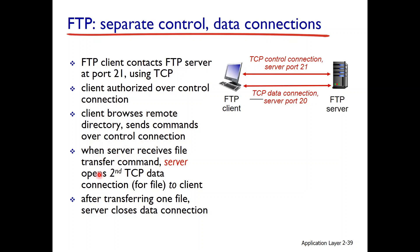When the server receives a file transfer command — like file upload or download — this command goes over the control connection. Once the server receives the file transfer command, the server opens a second TCP data connection for the file to the client. After transferring one file, the server closes the data connection.